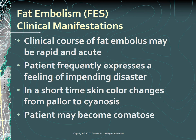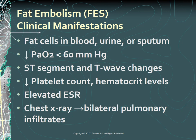The clinical course of a fat embolus may be rapid and acute. The patient often expresses a feeling of impending disaster. Skin color changes from pallor to cyanosis and the patient may become comatose. No specific lab examinations are available to aid in diagnosis; however, certain diagnostic abnormalities may be present, including fat cells in the blood, urine, or sputum; a decrease of PAO2 to less than 60; ST segment and T wave changes on ECG; a decrease in platelet count and hematocrit levels; and an elevated erythrocyte sedimentation rate (ESR). A chest x-ray may show bilateral pulmonary infiltrates.